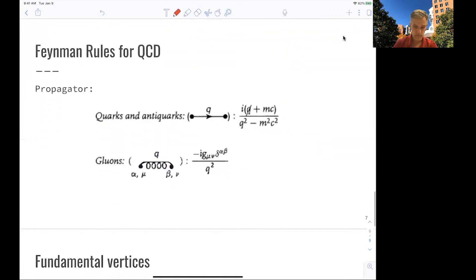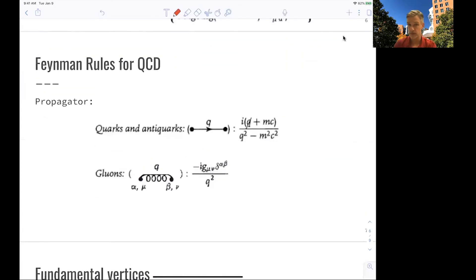For the propagators, we have quarks and anti-quarks and gluons. Gluons are massless, so the propagator here looks very much like the one for the photon. And the propagator for the quarks looks very much like the one we had for the electron in QED.